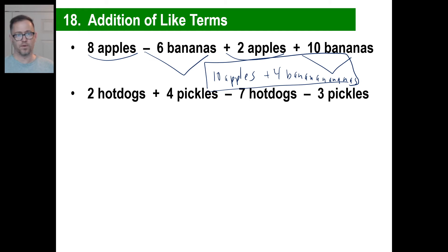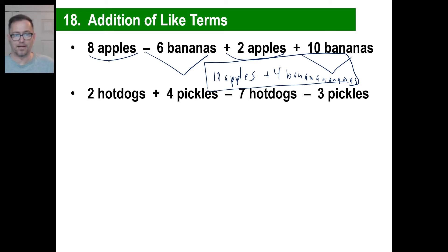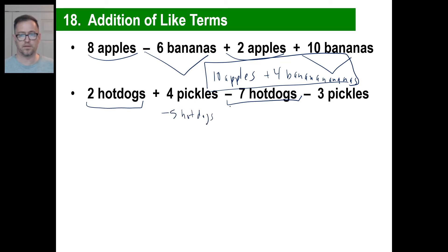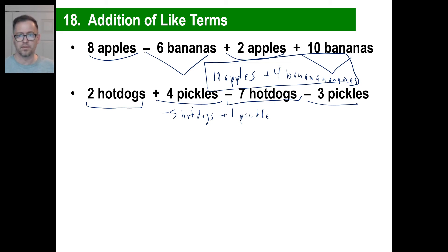Another example: 2 hot dogs and 4 pickles, then subtract 7 hot dogs and negative 3 pickles. You can't mash hot dogs and pickles together and call it some new thing. You've got 2 hot dogs minus 7 hot dogs, which means negative 5 hot dogs. You have 4 pickles minus 3 pickles — that means you have 1 pickle. That's all. You can't say 'negative 4 pickle-dogs.' Don't try to do anything else.